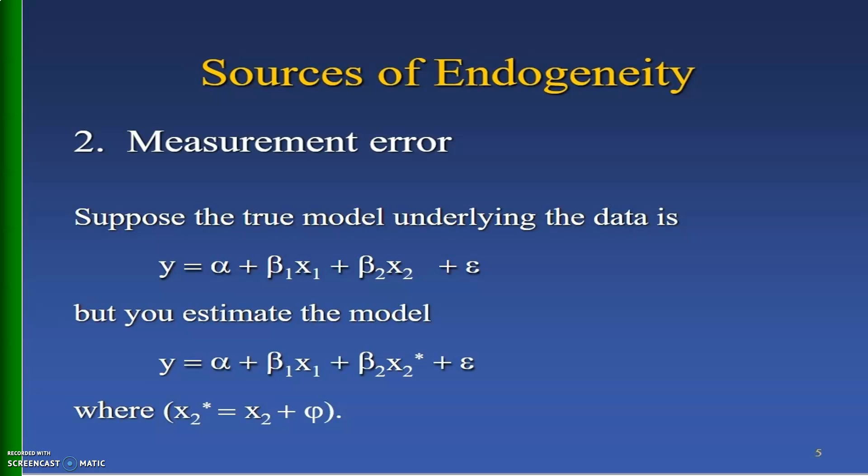The second source of endogeneity is measurement error. Assume the true model underlying the data is y equals alpha plus beta_1 x_1 plus beta_2 x_2 plus epsilon, but instead we estimate the model y equal to alpha plus beta_1 x_1 plus beta_2 x_2* plus epsilon, where x_2* equals x_2 plus some constant phi.